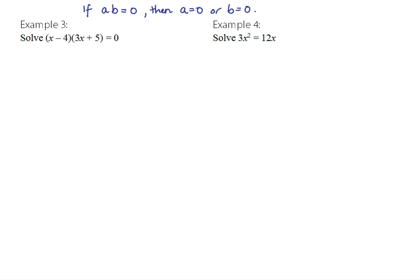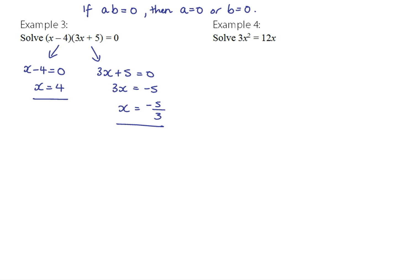We've already got steps one and two done in this equation, so we can immediately use the null factor law. If these two brackets multiply together to give zero, then either the first bracket equals zero — which means x must equal 4 — or the second bracket equals zero, which means 3x = −5, so x = −5/3. And so there are your two solutions to this quadratic equation.